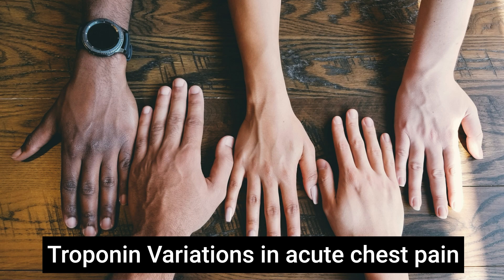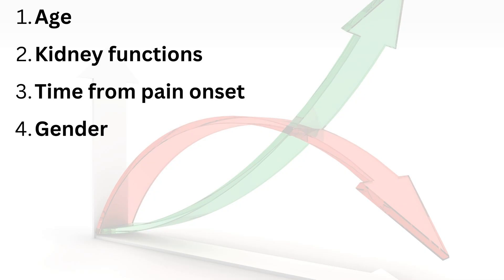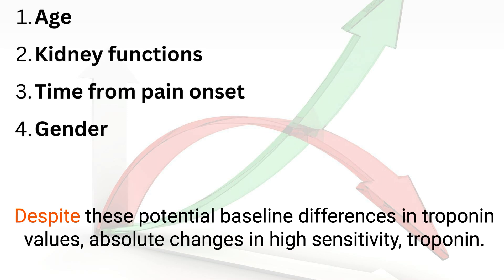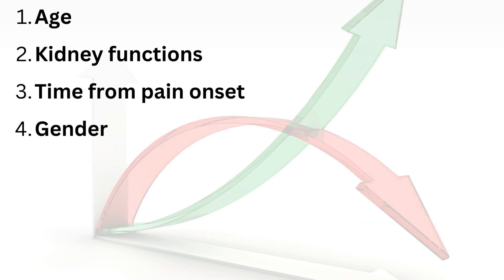For the high-sensitivity test, do we expect variations based on age or gender? Yes, there are confounders for troponin elevation in suspected non-ST elevation ACS: age, kidney function, time of pain onset, and gender. Patients with chronic kidney disease may have elevations up to 300% the normal value. Time of chest pain onset can also result in 300% variation. Males can have 40% higher levels than females, and elderly patients may also have higher values. Despite these potential baseline differences, absolute changes in high-sensitivity troponin are still diagnostic and prognostic regardless of these variables.